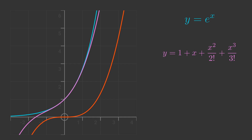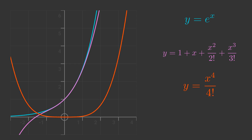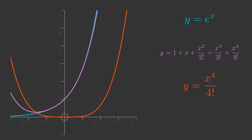The next term is y equals x to the 4 over 4 factorial. We will add this term to the approximation. Our approximation now has an extra term, x to the 4 over 4 factorial. This time the value and the first 4 derivatives are exactly correct at x equals 0. Every time we add an extra term, the approximation gets a little bit more accurate. In particular, the range of x values where the approximation is reasonably good expands each time.